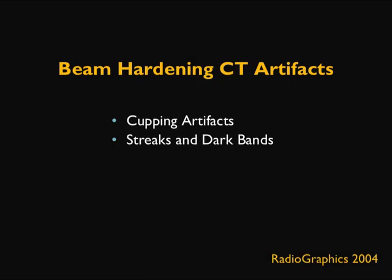Under beam hardening artifacts, there are two types: cupping artifacts and streaks and dark bands. Note that this discussion does not represent a comprehensive study of all artifacts — only the key and important ones are covered here.